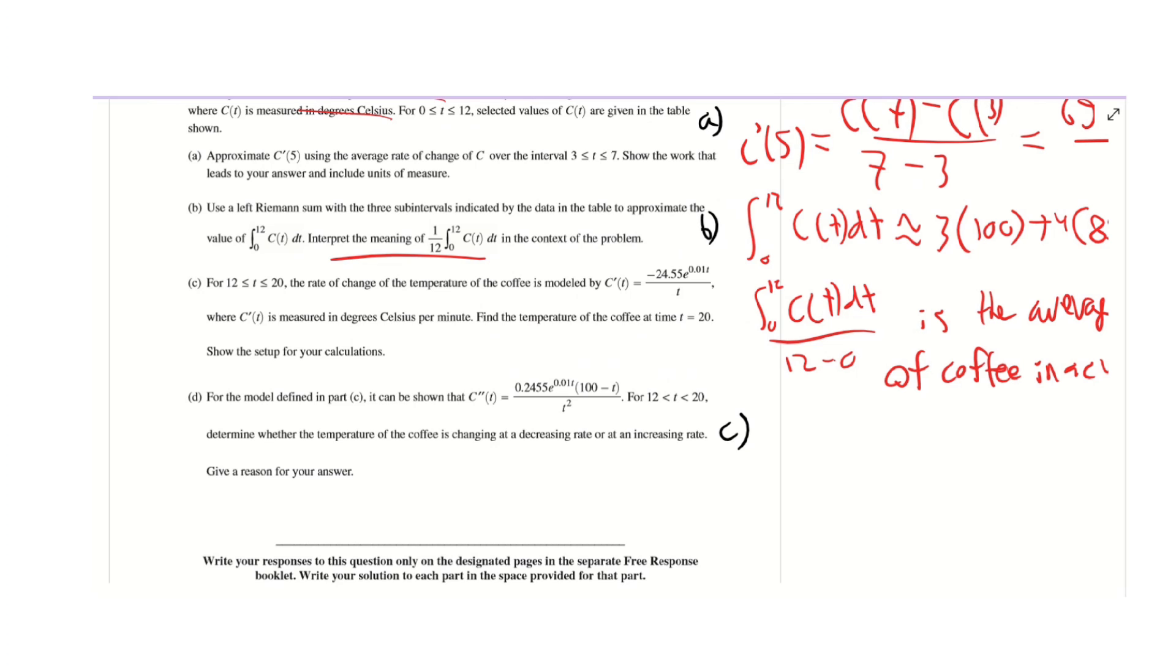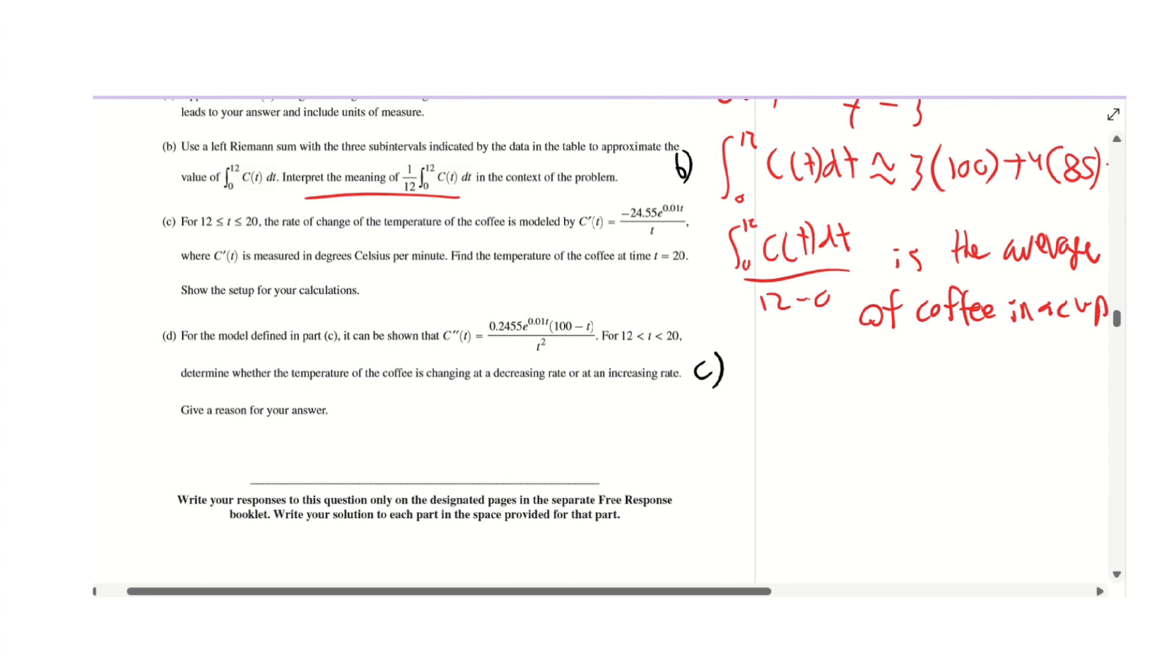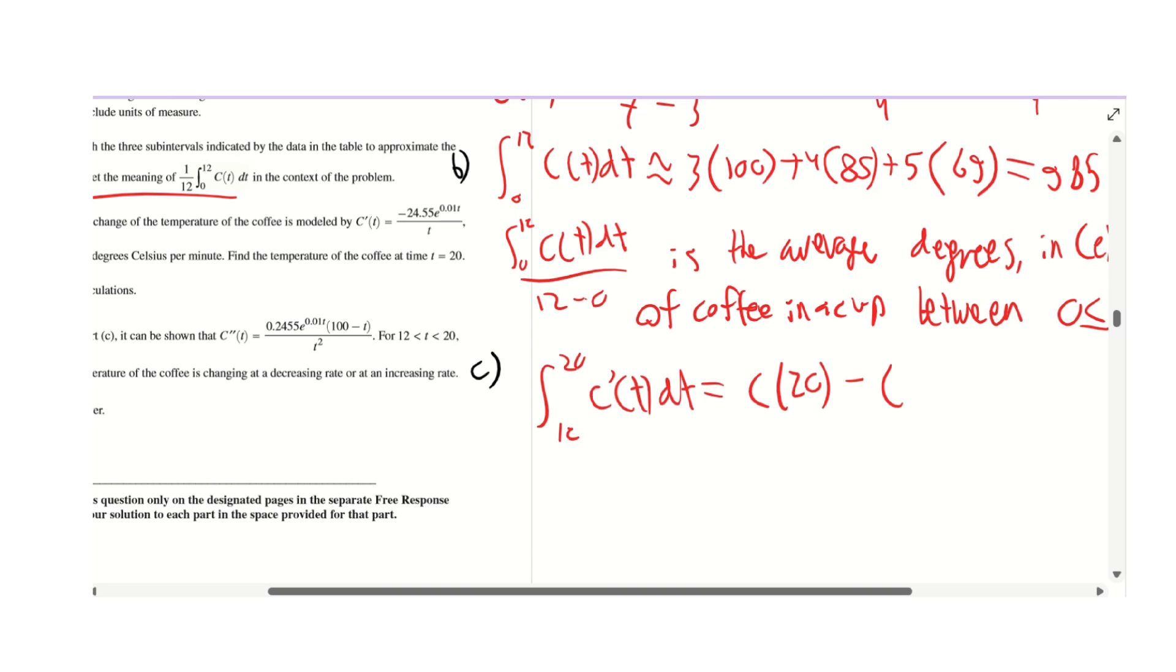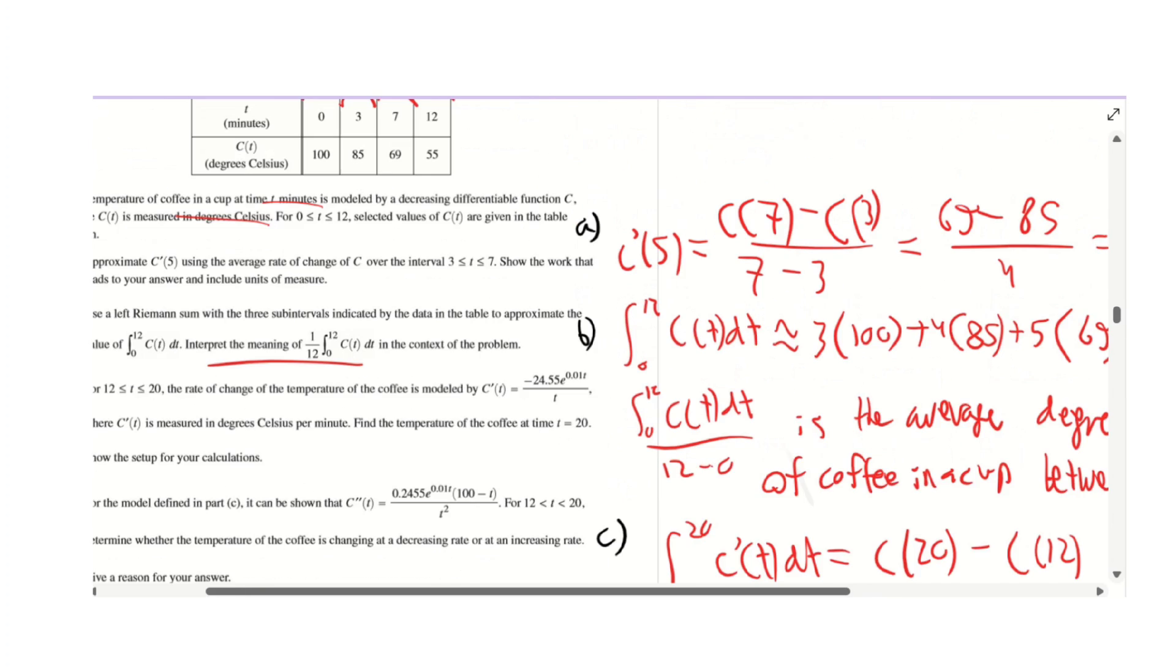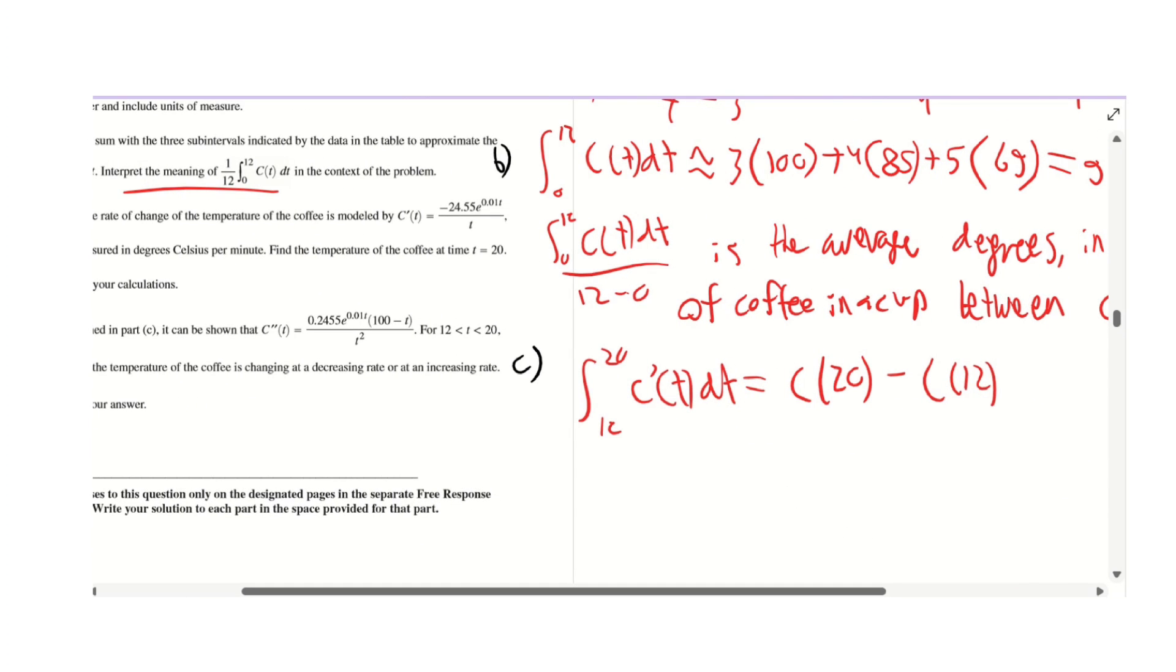Part C states the rate of change of temperature of the coffee is modeled by C'(t), where C' is measured in degrees per minute and the temperature of the coffee at time t equals 12 is 55. For this one, you use the first fundamental theorem of calculus. We would say integral from 12 to 20 of C'(t)dt, which equals C(20) - C(12).